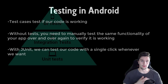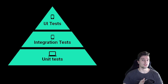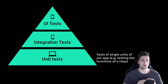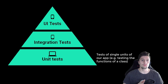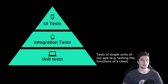Let's look at the testing pyramid. There are unit tests, integration tests, and UI tests. Unit tests make up the base of the pyramid — you can think of them as testing single units or single components in our app. They are also the fastest tests, running in a few milliseconds in most cases, and are made to be run very often.